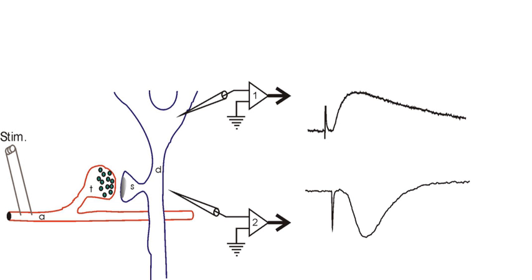Alternatively, ionic continuity may be established by perforating the patch by allowing exogenous pore-forming agent within the electrolyte to insert themselves into the membrane patch. Perforated patch recording.